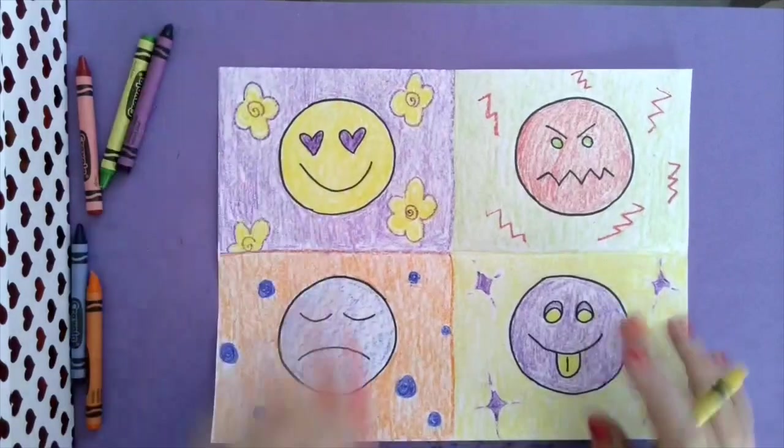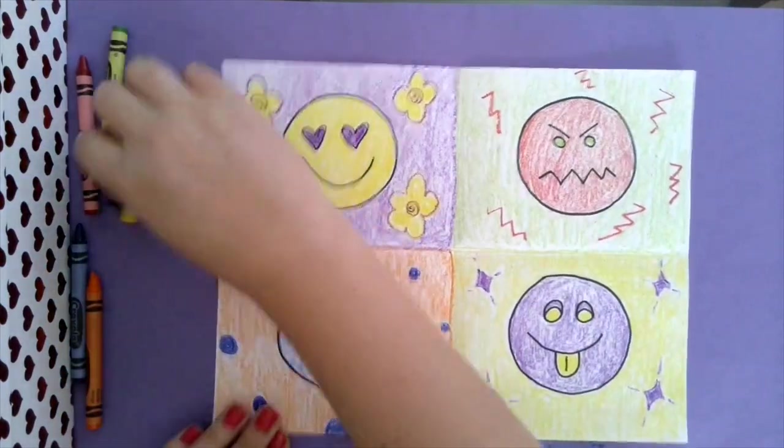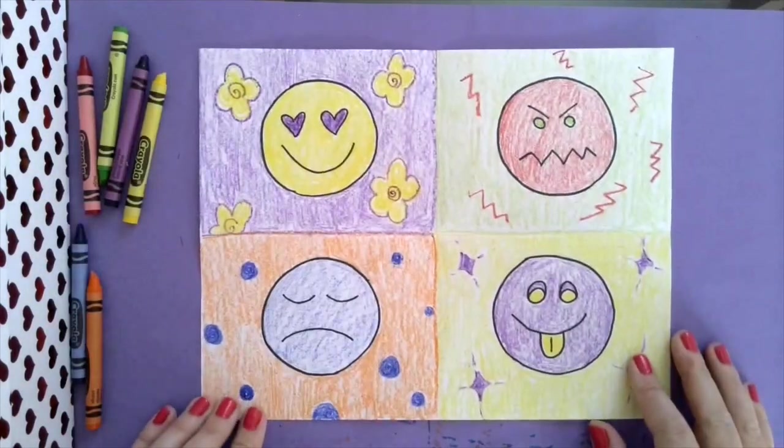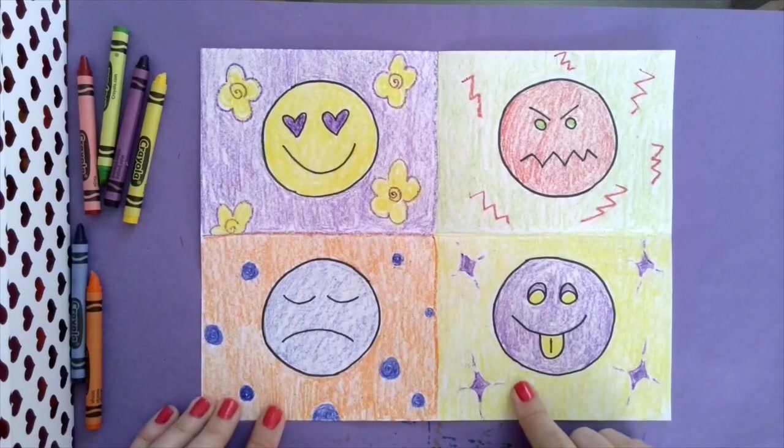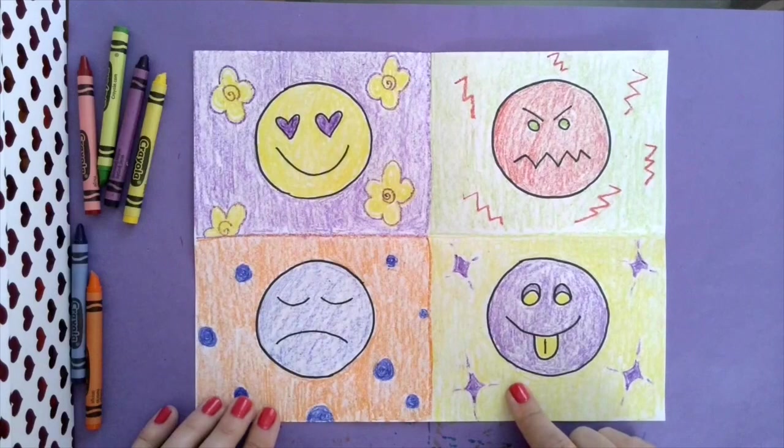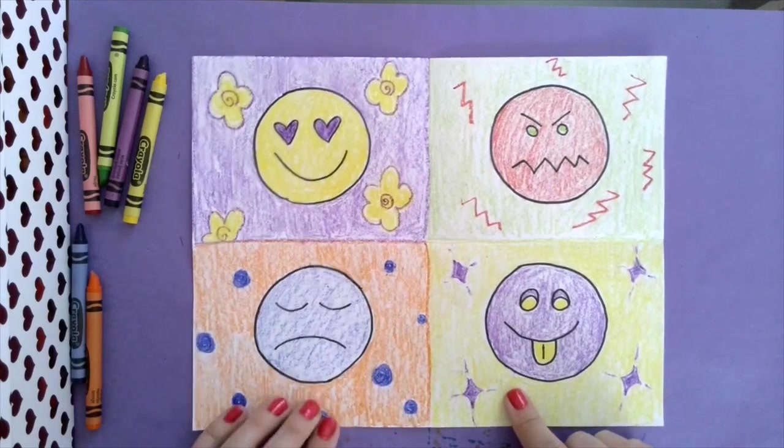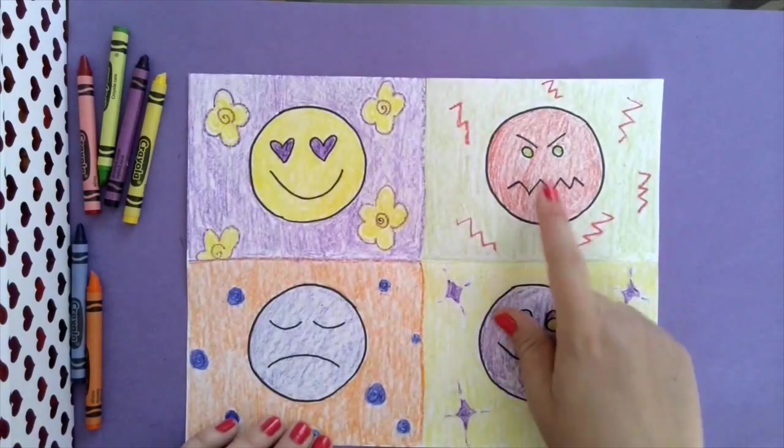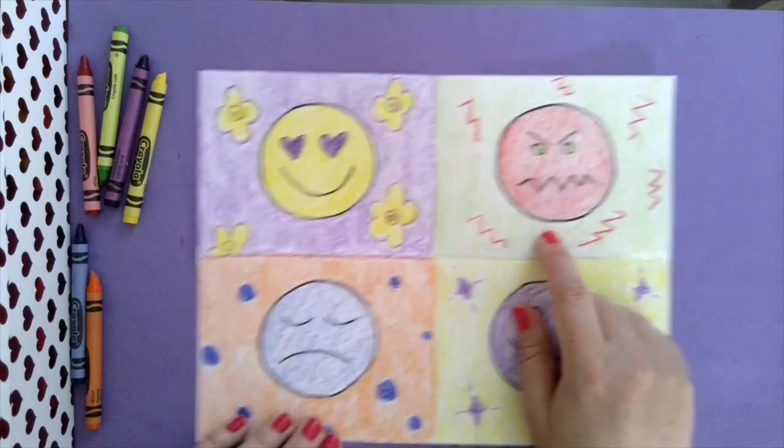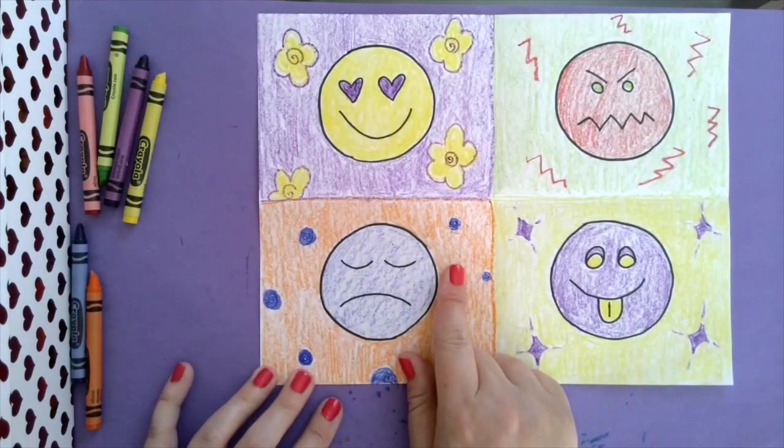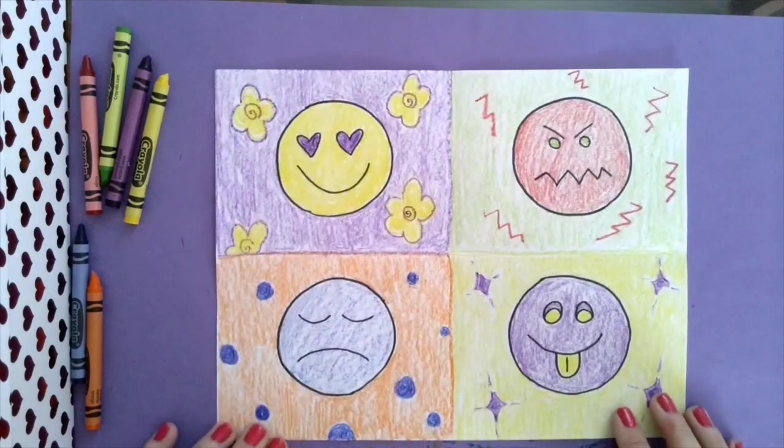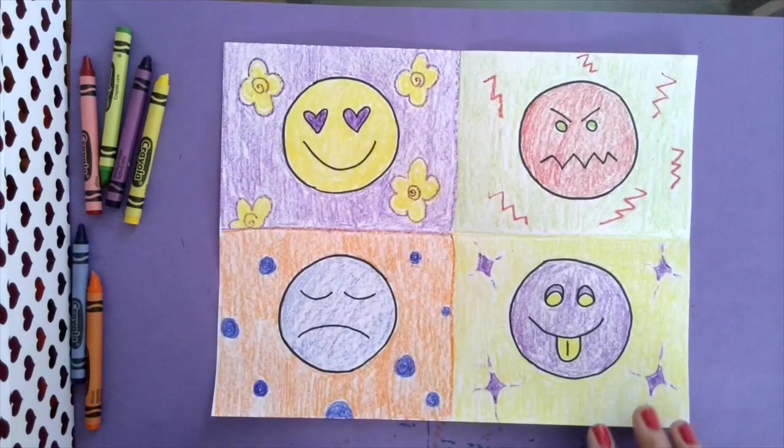And there you are my friends. We are done with our complementary color emojis. Let's review. Purple and yellow are complementary colors because they're opposite of each other on the color wheel. Green and red are opposite of each other so that makes them complementary also. And blue and orange are also complementary colors. I hope you had fun making your emojis today. And I can't wait to see you next week.